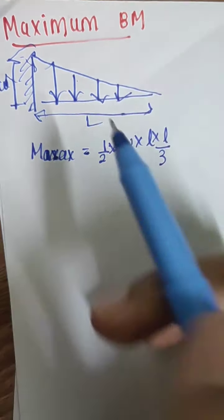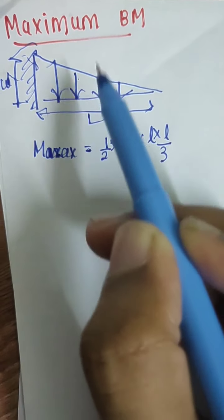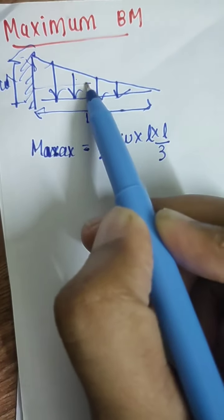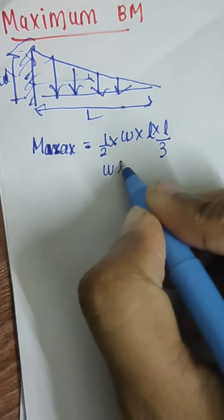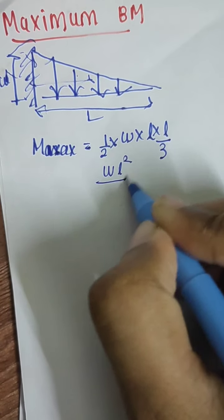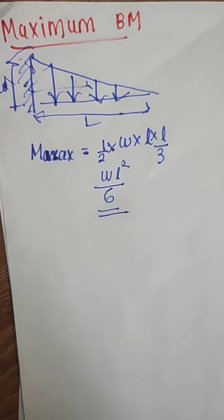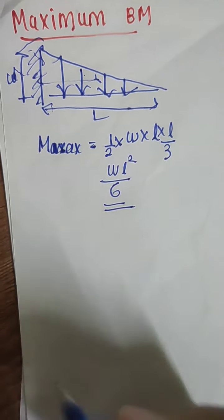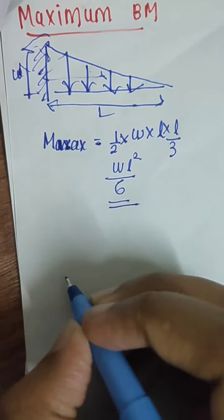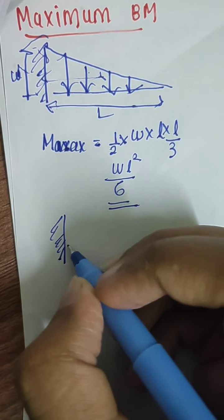The load acts at l/3 from the tip and 2l/3 from the fixed end. So the maximum bending moment works out to w × l × l/3, giving wl²/6. This is the maximum bending moment for a UVL on a cantilever beam.